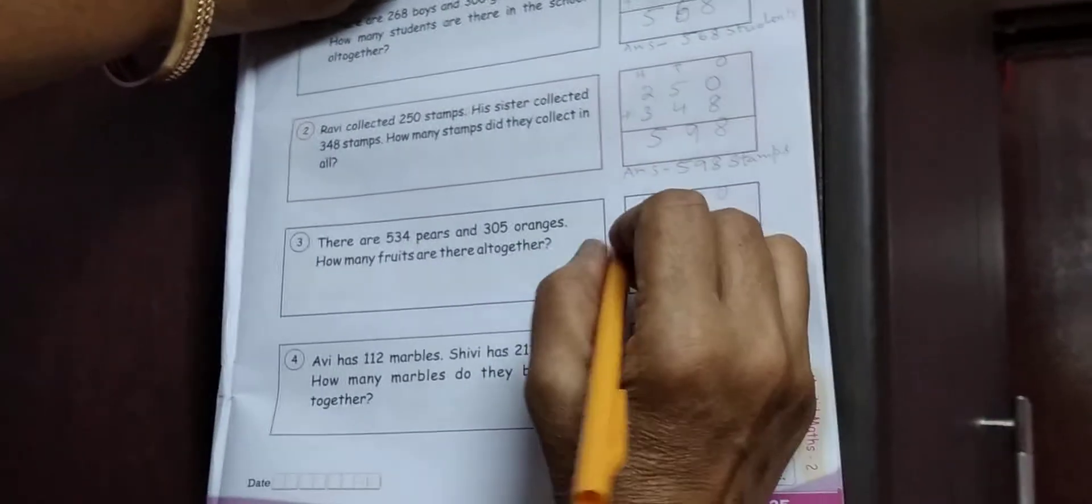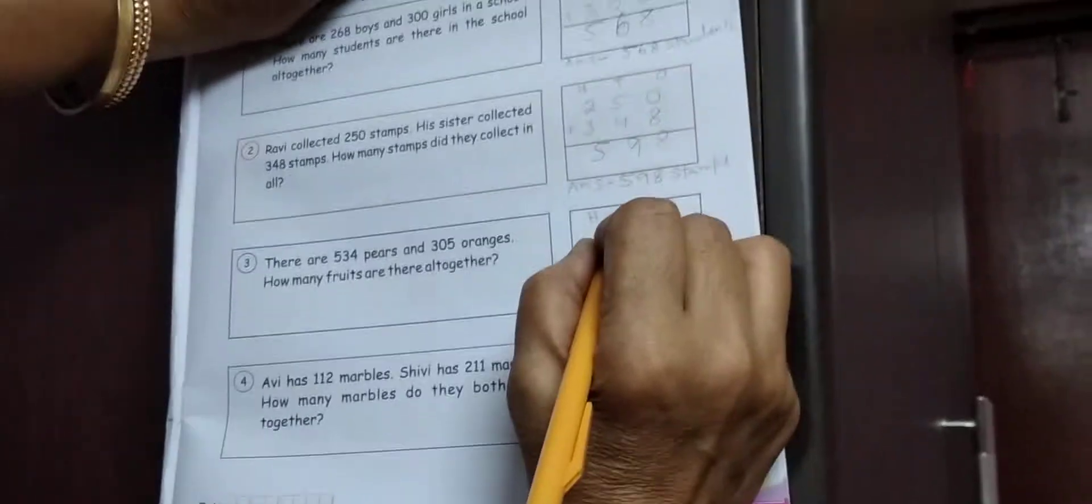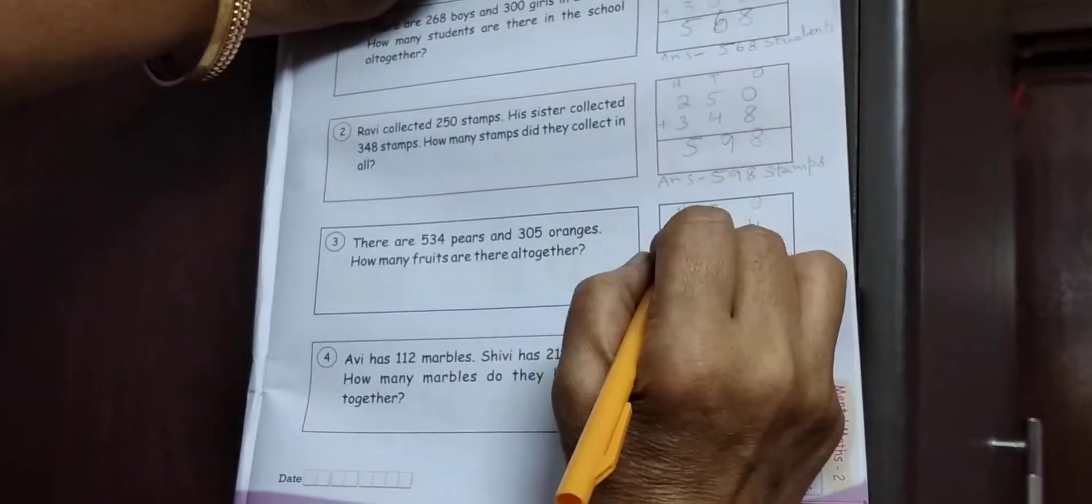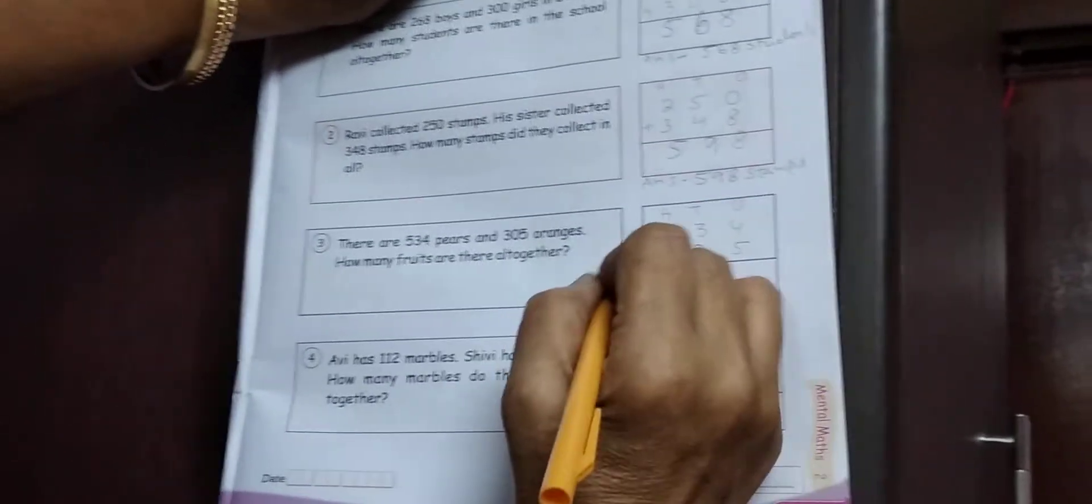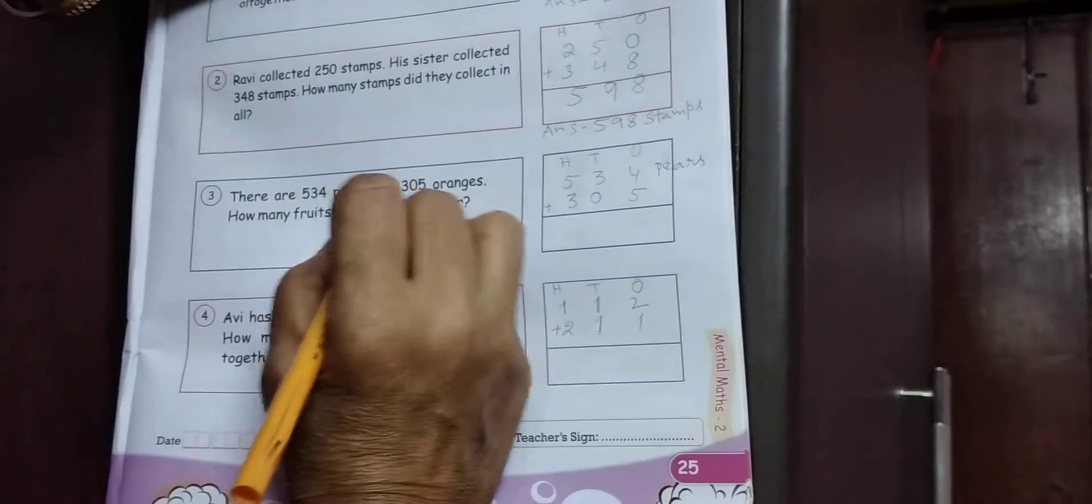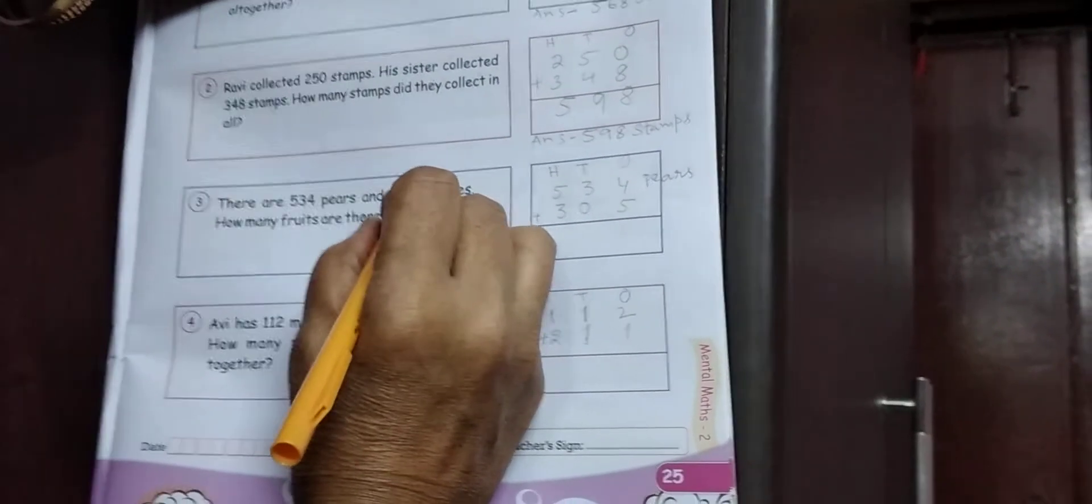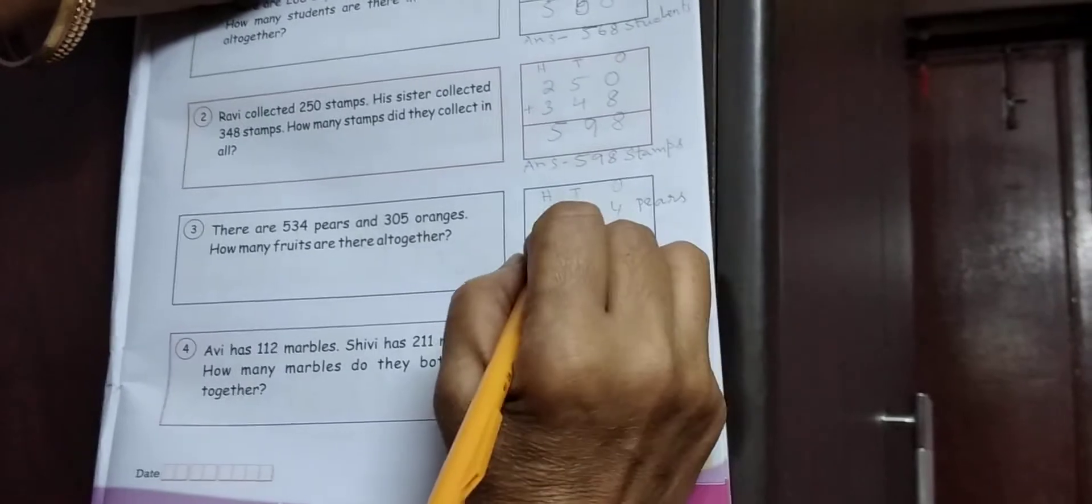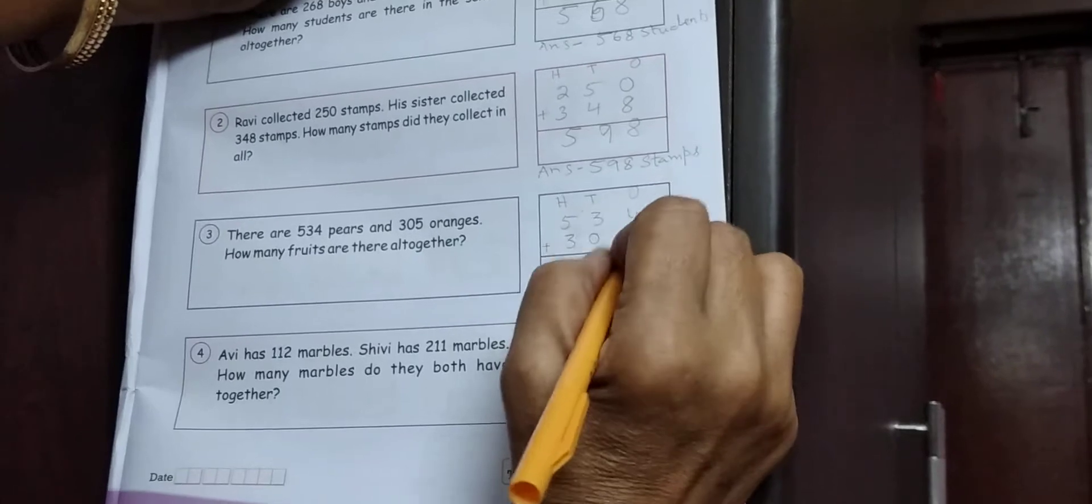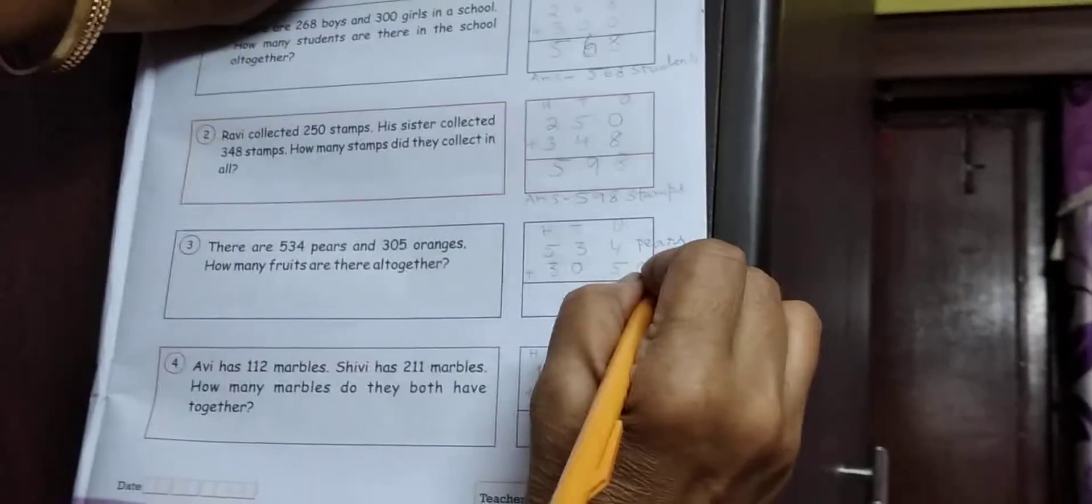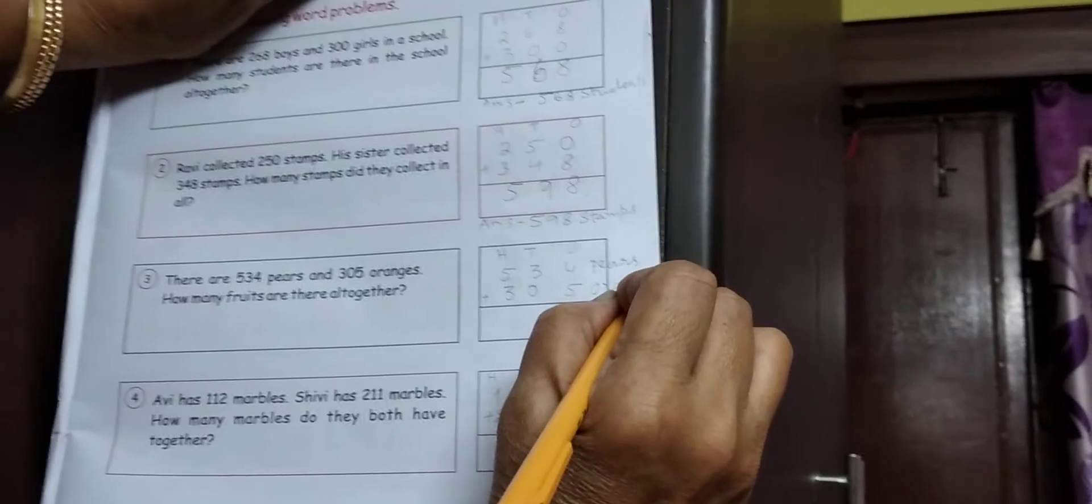Look at the page. 100, tens, ones. 100, 500, 3 tens, 4 ones. At akihae pears. P, E, A, R, S. Pears. At akihae 305 oranges. 300, 0 tens, 5 ones. Oranges. O, R, A, N, G, E, S. Oranges.